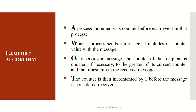A process increments its counter before each event — that is, when it asks for a request, it increments its counter. When a process sends a message, it includes its counter value with that message. Suppose a process has asked for a resource, used it, and then released it; the next time it asks for a resource, the counter for the message will be incremented by one. On receiving a message, the counter of the recipient is updated if necessary to the greater of its current counter and the timestamp in the received message. The process, its request message counter, and its timestamp — all three things will be stored and sent to the other process. The counter is then incremented by one before the message is considered received or it enters its critical state.